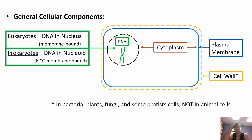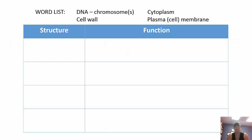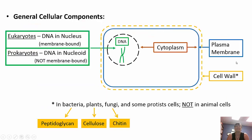Bacteria, plants, fungi, and some protists have cell walls; animal cells do not. In bacteria, the cell wall is made of peptidoglycan, which allows classification as gram-positive or gram-negative based on the amount present. Plant cell walls are made of cellulose, and fungal cell walls are made of chitin — both polysaccharides.